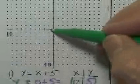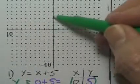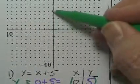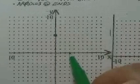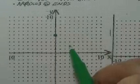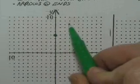Go sideways 0, but go up 5: 1, 2, 3, 4, 5. Next point is (3, 8). So go over 3 — 1, 2, 3 — up 8 — 1, 2, 3, 4, 5, 6, 7, 8.